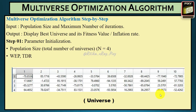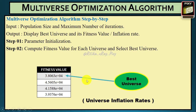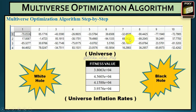In step two, we compute the fitness value for each universe using a fitness function. The fitness value is computed for each universe, and after that we select the best universe. Here, the minimum value is considered the best. Universe one has the value 3.8063, so this is the best universe. We now have the initial population, the best universe (number one), and all fitness values for each universe.